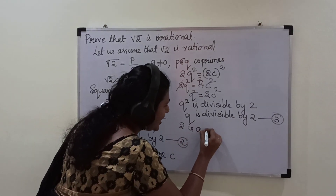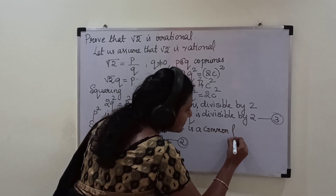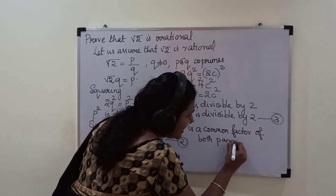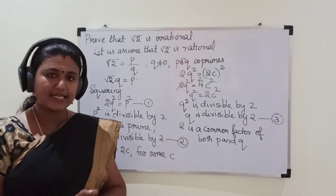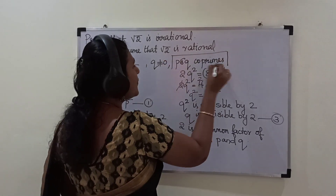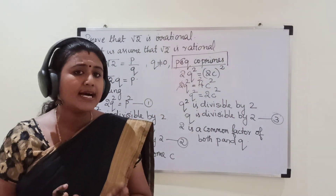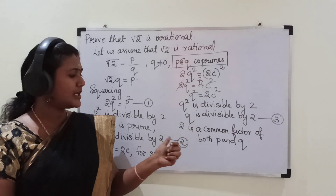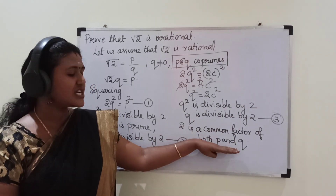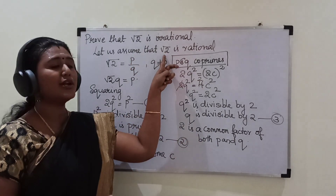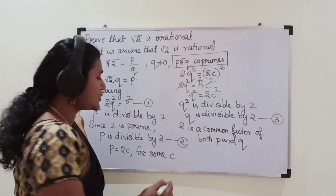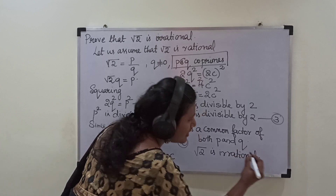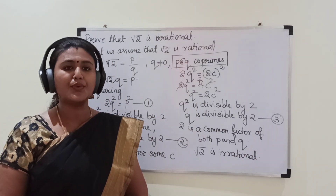But this contradicts the fact that p and q are co-primes, since co-prime means they have only 1 as their common factor. Here we found that p and q have another common factor, 2. We arrived at this contradiction because of our wrong assumption. So our assumption is wrong, and therefore √2 is irrational.